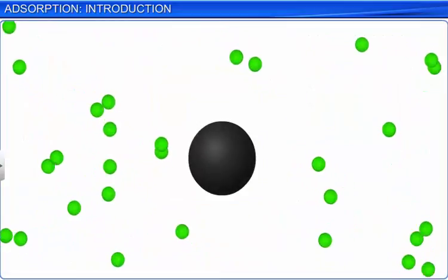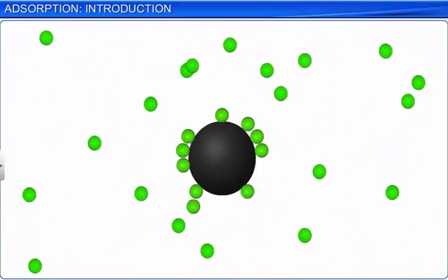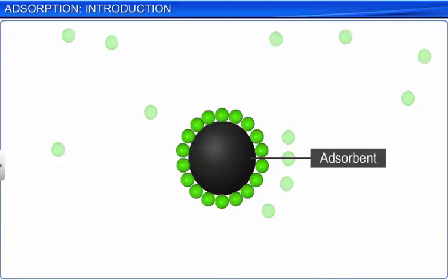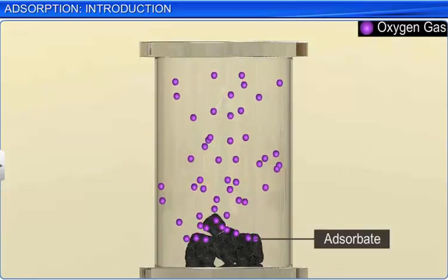The substance on the surface of which adsorption takes place is called the adsorbent, while the substance thus adsorbed is called the adsorbate. In the example that we just saw, the molecules of oxygen are the adsorbate, while the solid charcoal is the adsorbent.